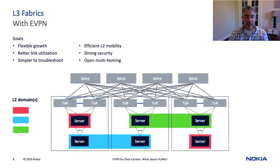If we use EVPN for an overlay network and build an overlay network in the data center, it allows us to keep all the benefits of the layer three fabric design for the underlay or transport network, but provides us with the necessary host mobility through scalable and granular layer two domains. So now we get the best of both worlds, and we get to adopt the same VPN security model that we use in our WANs for both layer two and layer three services.